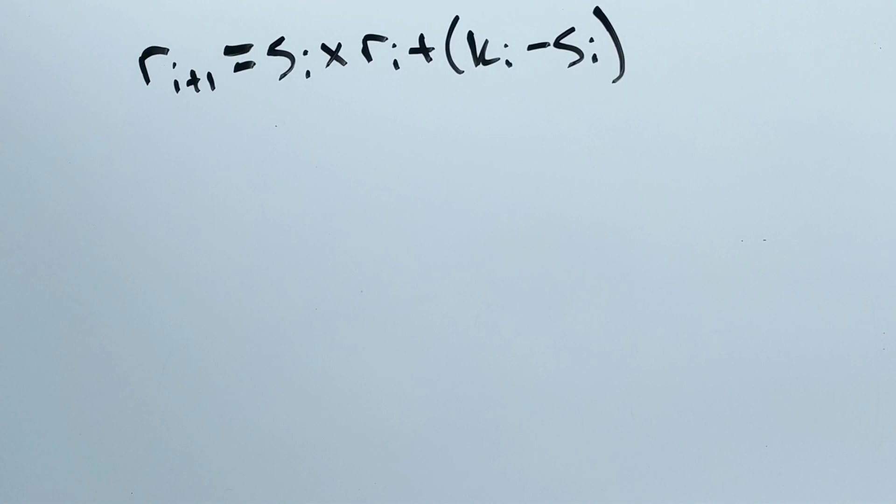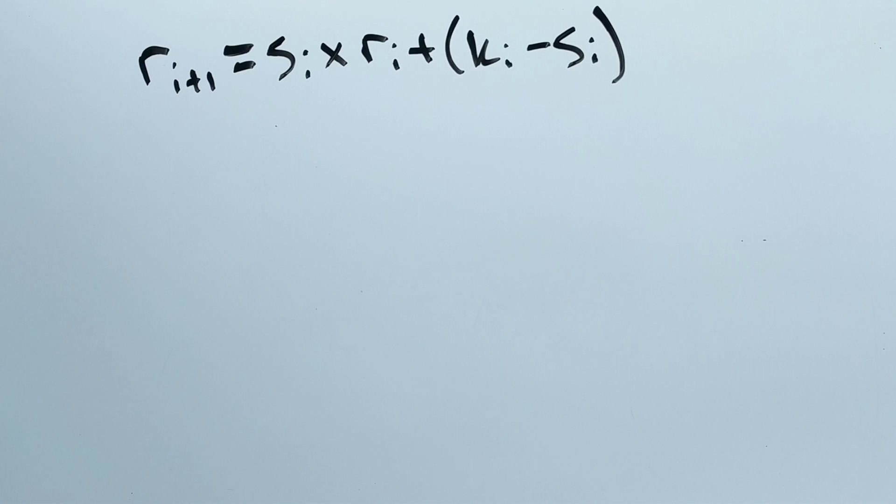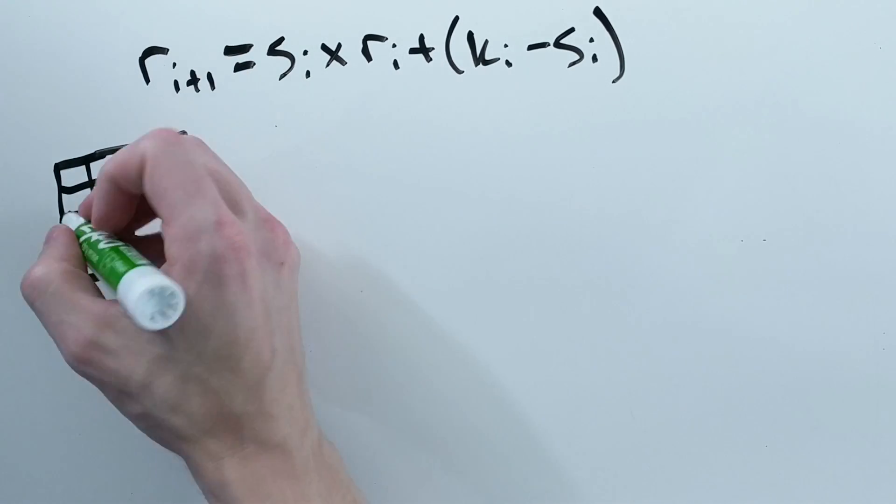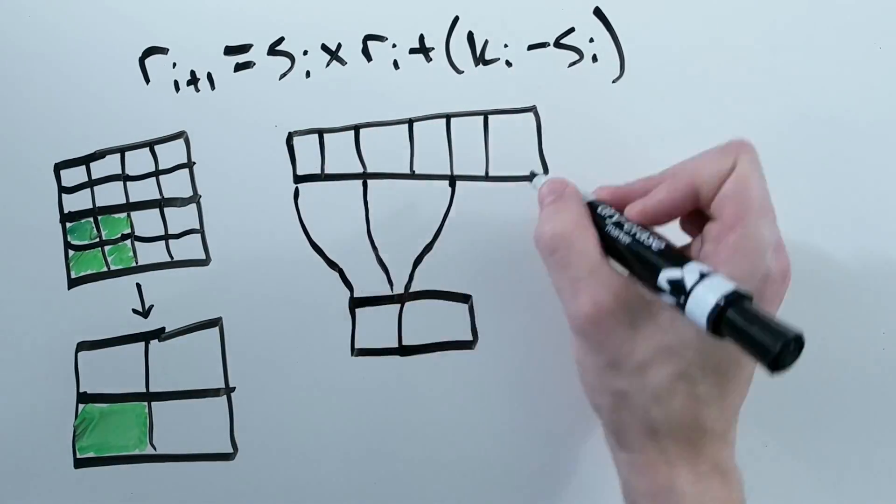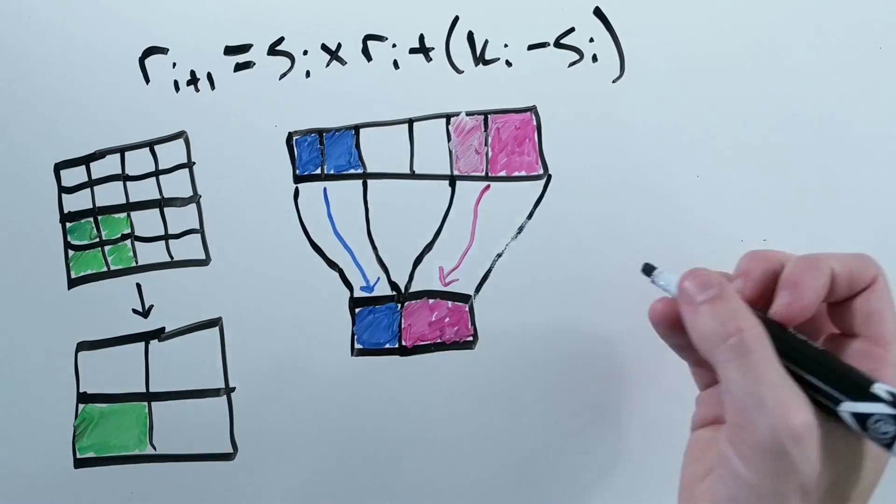Of course, there's this nice formula for calculating the size of the receptive field at any layer, but that formula is different based on other architecture choices in your convolutional neural networks like pooling, stride, and dilated convolutions.